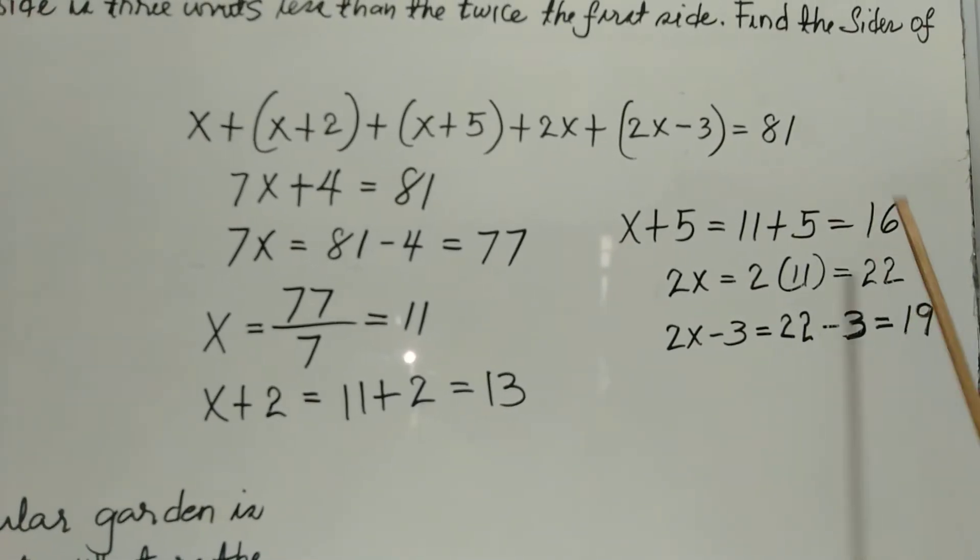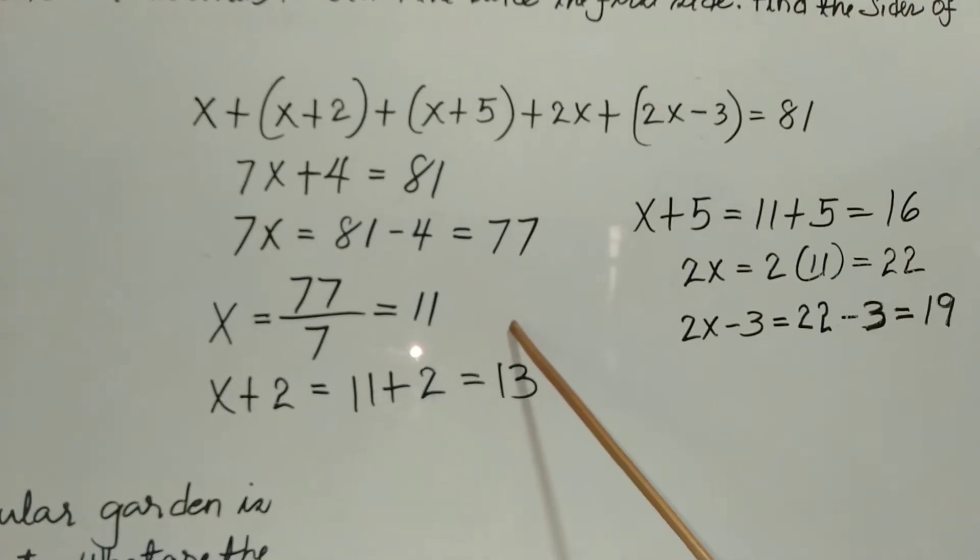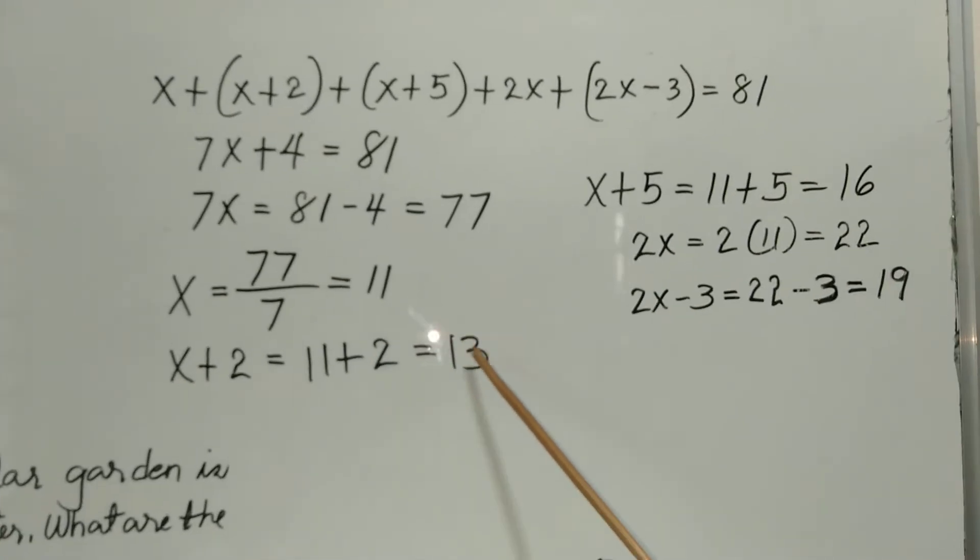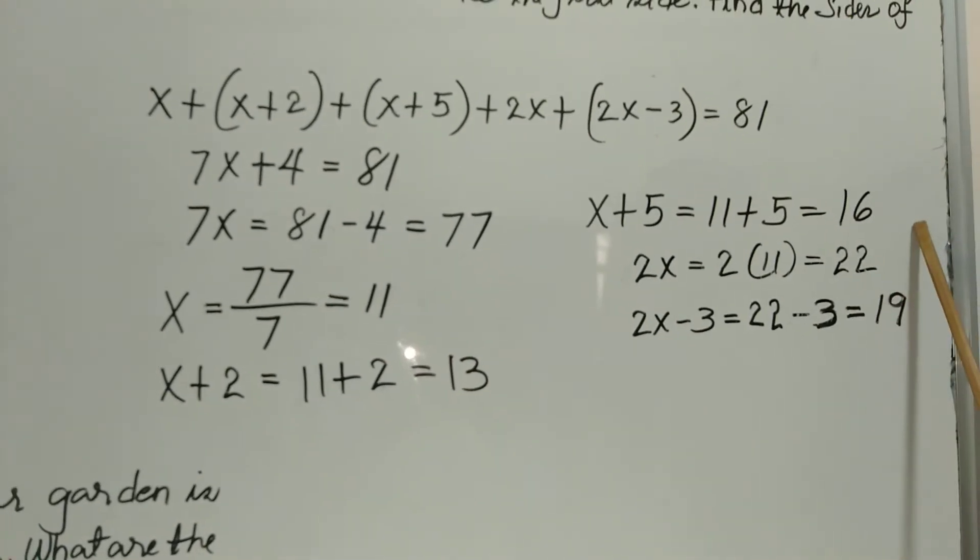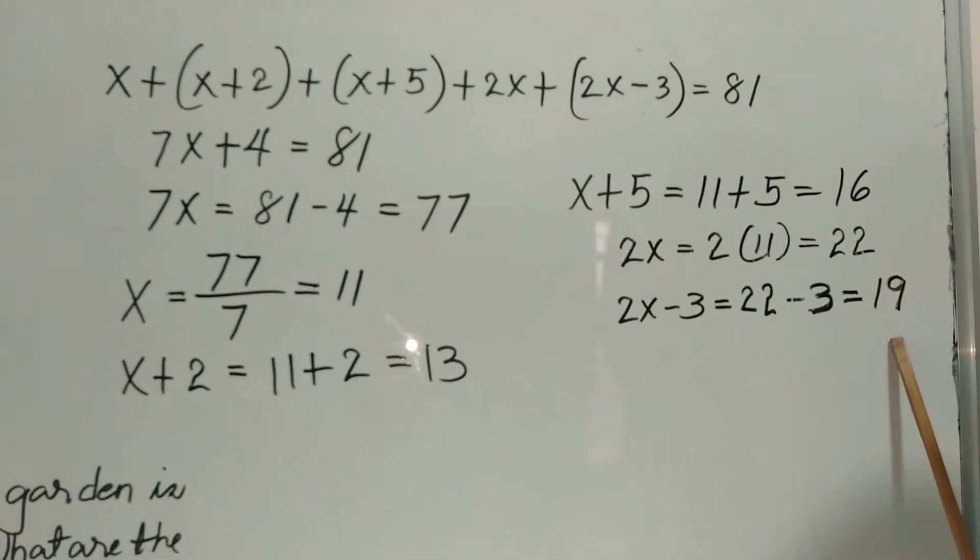If you want to check this, we just add all the measures of the sides. So 11 plus 13 is 24, plus 16 is 40, plus 22 is 62, plus 19 is 81.